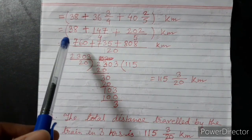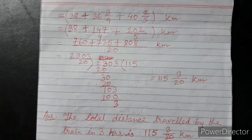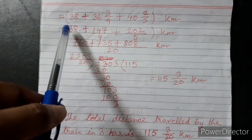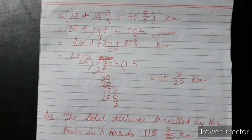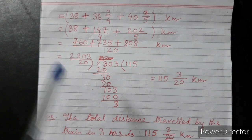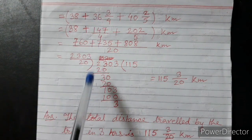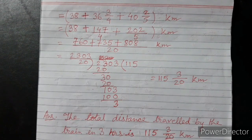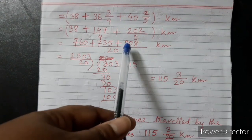Toh numerator mein hua 760 plus 735 plus 808. Yye pehle denominator se LCM ko divide karna hai, joh quotient aega usse numerator ko multiply karke likhna hai. Yahan 38 hai matlab 38 by 1. Toh 1 se agar 20 ko divide karengi toh 20 aega quotient mein. 20 into 38 se 760 aega. Aysse hi, 4 se agar 20 ko divide karengi toh 5 aega. 5 into 147 karne se 735 hoga. Next, 5 se agar 20 ko divide karengi toh 4 aega. 4 into 202 karne se 808 aega.